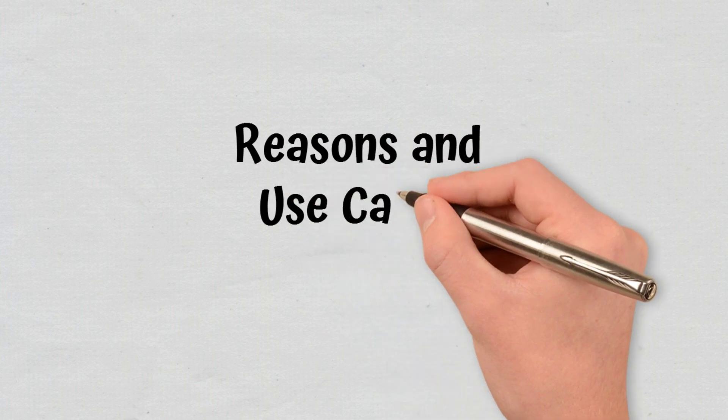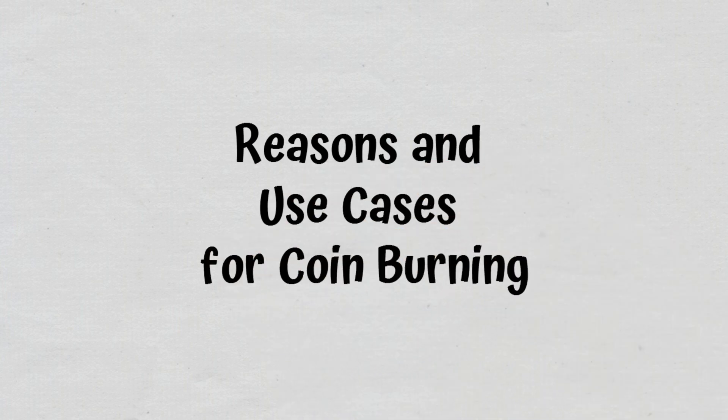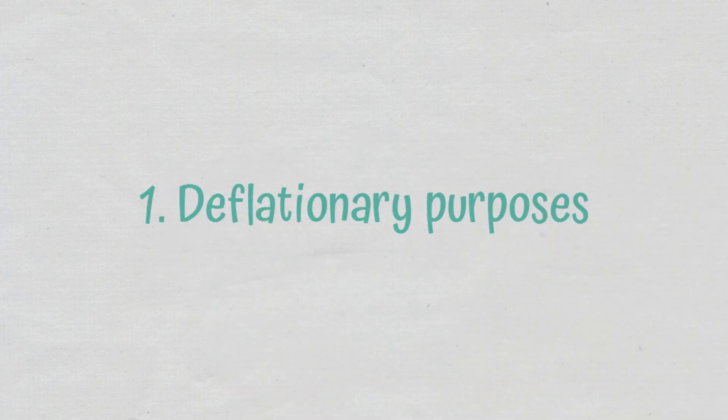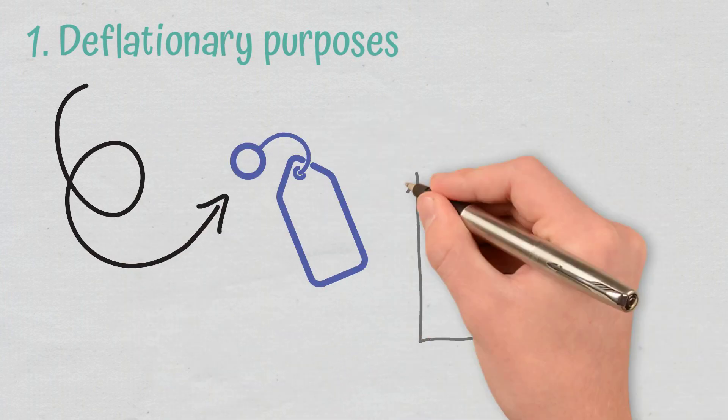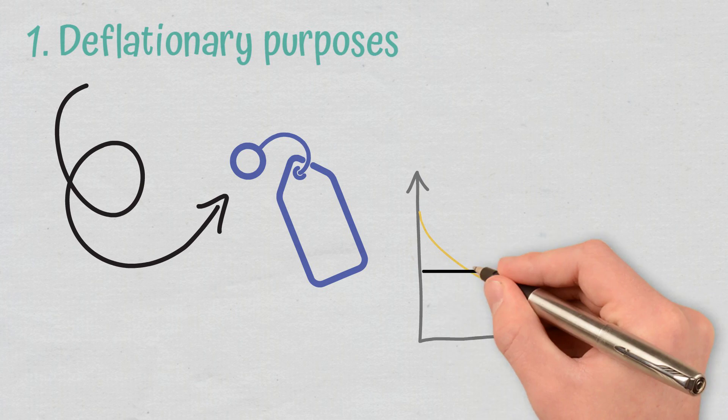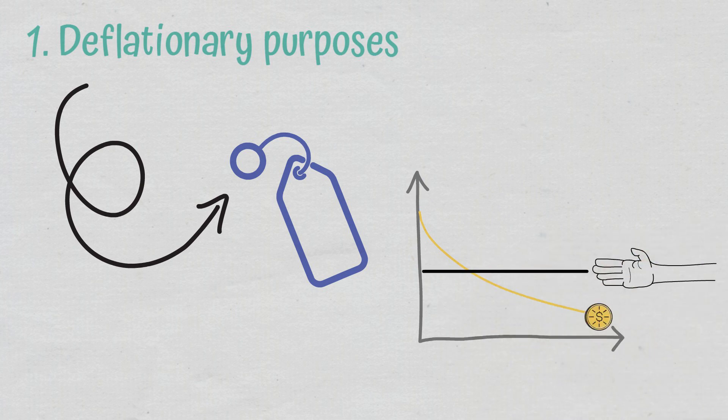Reasons and Use Cases for Coin Burning. There are various reasons for token burning. Deflationary purposes: used to influence the price of a coin. If the supply is reduced and the demand remains the same or increases, the price goes up. However, if the demand decreases, coin burning may not help much.